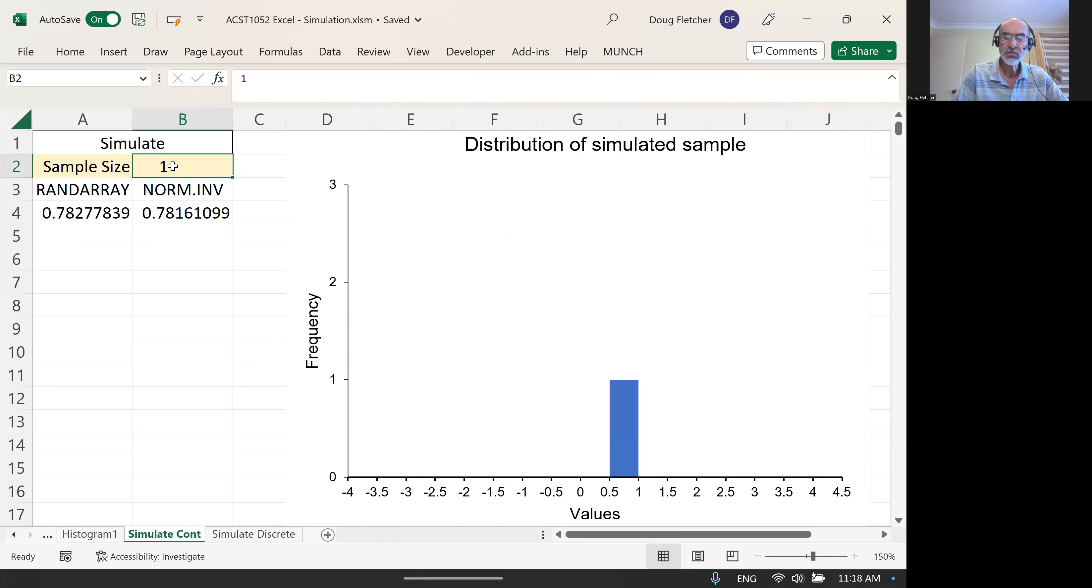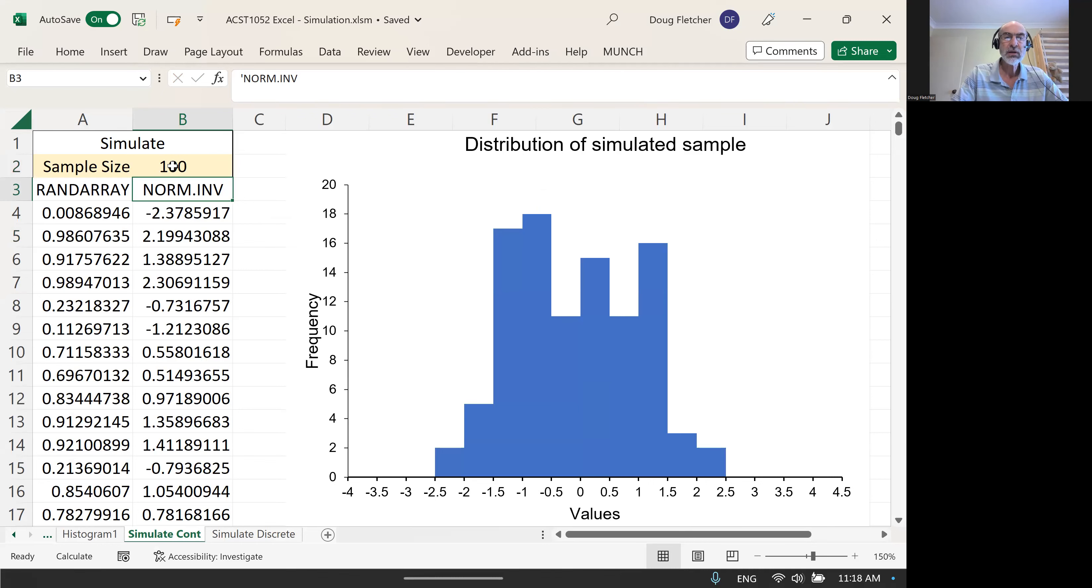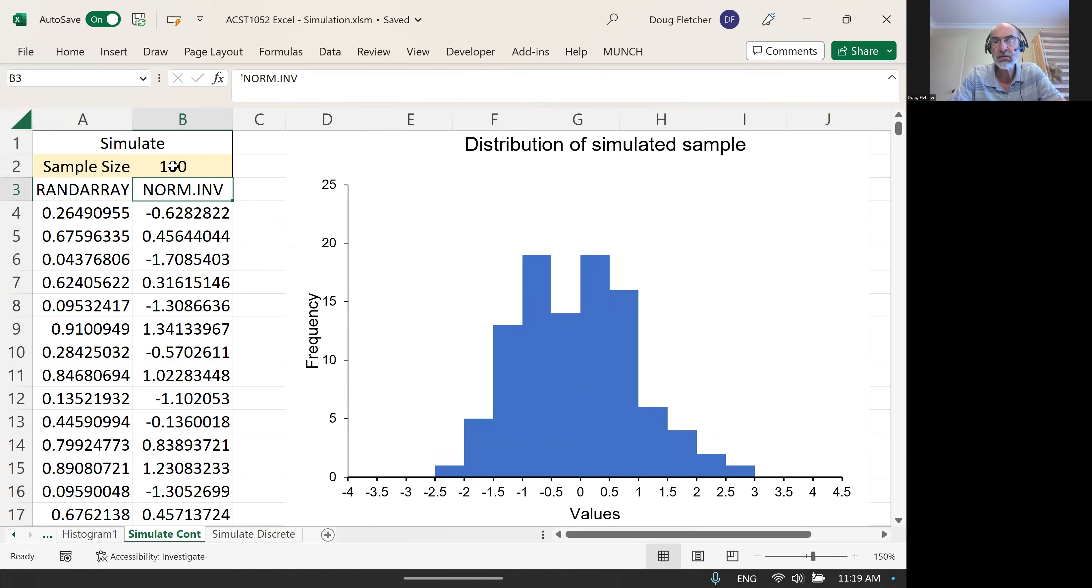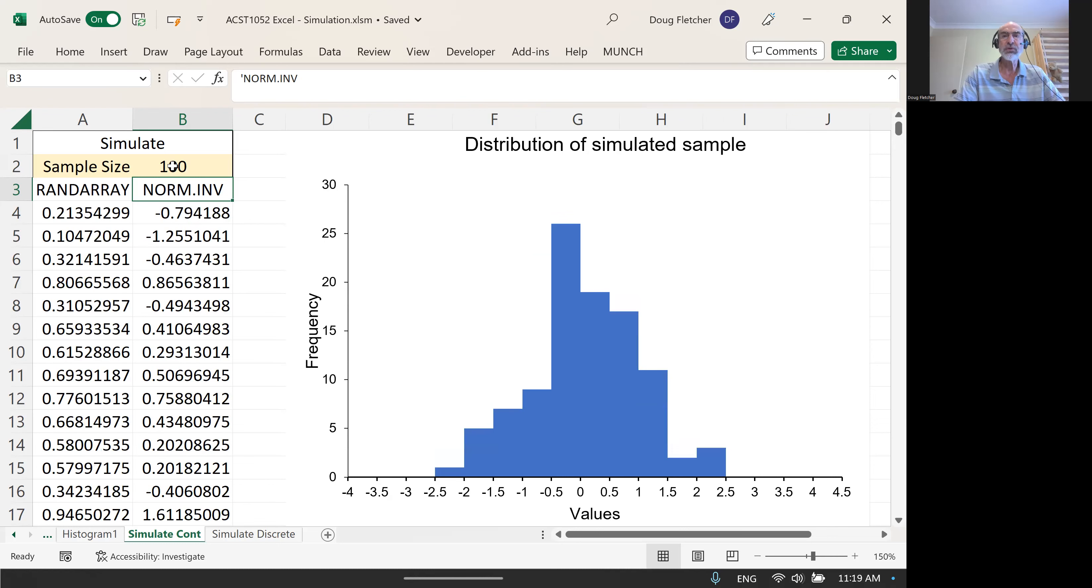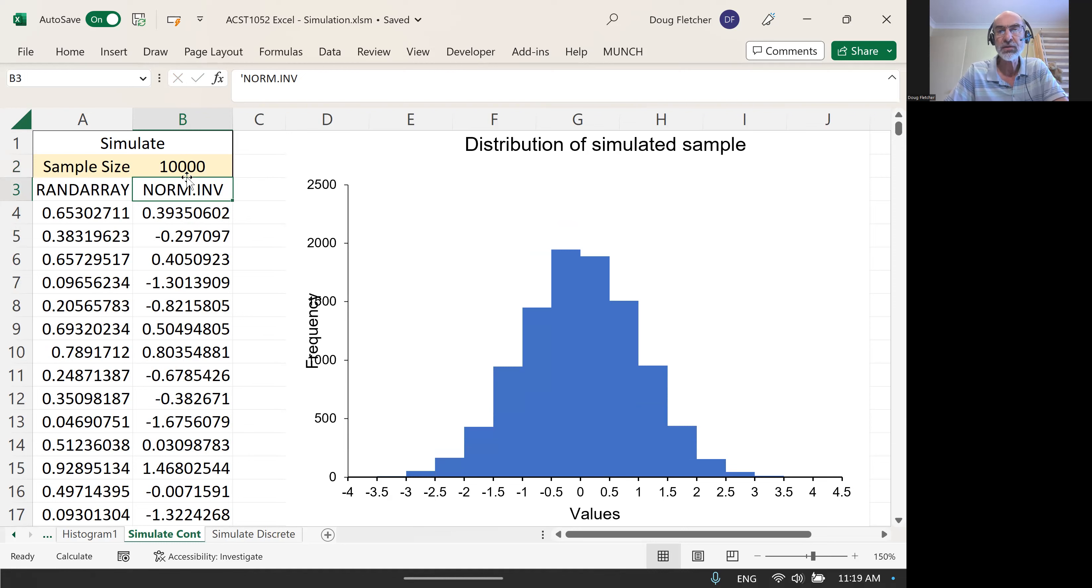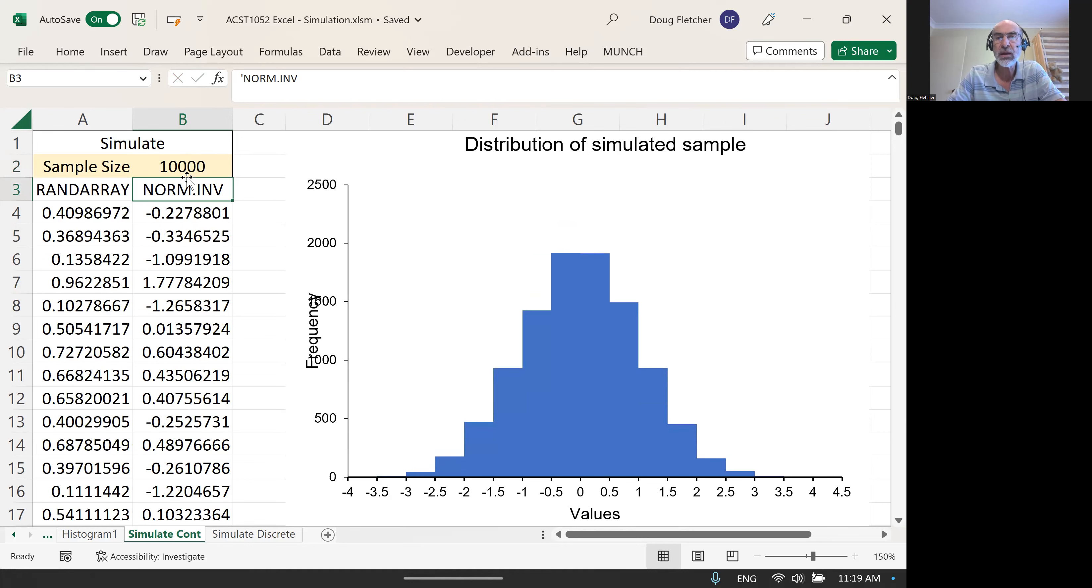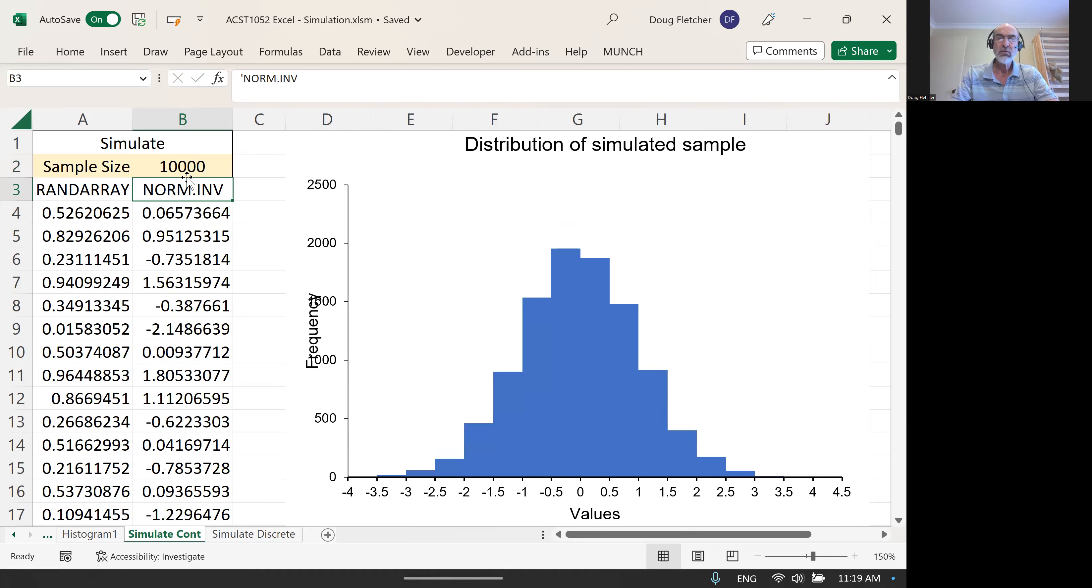Of course, we're typically going to do this for not just one value, which obviously will jump around all over the place. We're going to do this for quite a few values typically. If we get up to a hundred, then we start to see a distribution that looks roughly like a normal distribution, but it still jumps around a lot. You don't really get a stable sense of the distribution until the size of the sample you're simulating is quite large. Here I've gone to 10,000 and this gives us a very stable histogram. You'll see slight variations as I recalculate each time, but really you'd look at that and you say that histogram looks like a normal distribution.